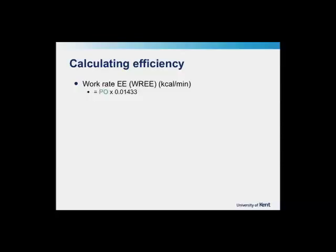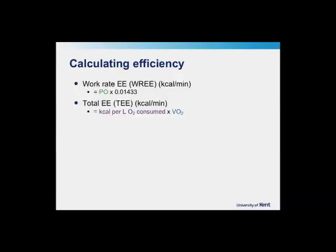To work out the total metabolic energy expenditure in kilocalories per minute, we multiply the VO2 from the Douglas bag by the kilocaloric equivalent per litre of oxygen consumed. Because we get different amounts of energy from carbohydrates, fats, and proteins, we need to account for this using the respiratory exchange ratio, or RER. For the data collected in the lab, Lauren was cycling at 120 watts, her VO2 was 1.86 litres per minute, and the RER was 0.87.